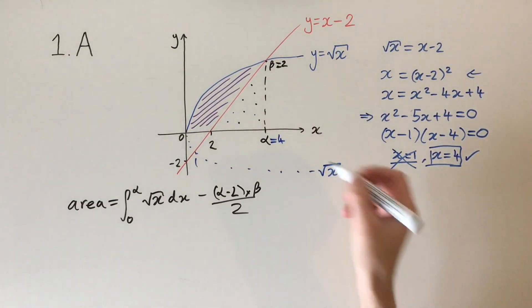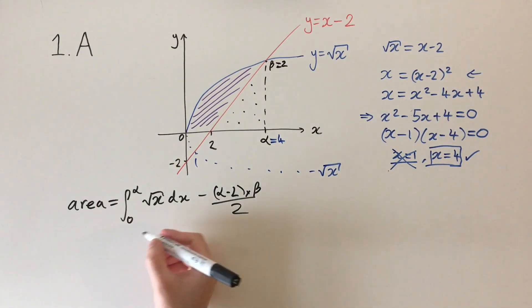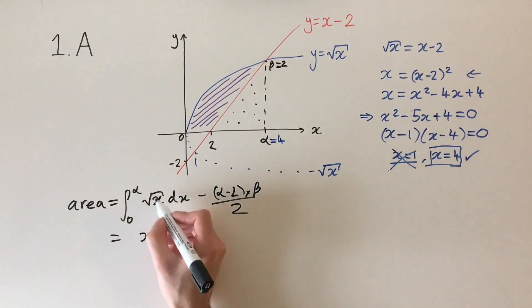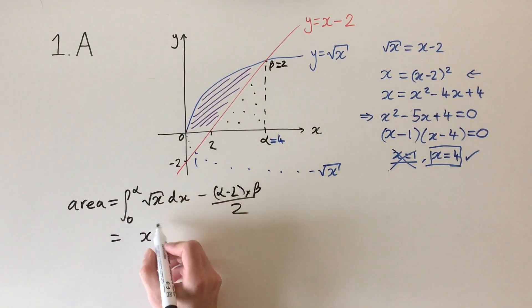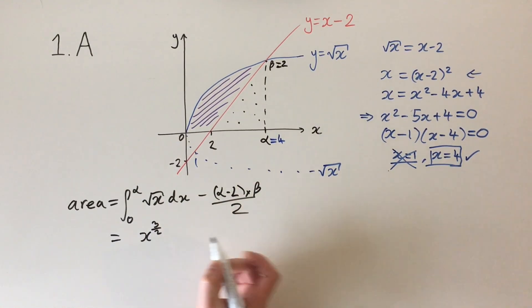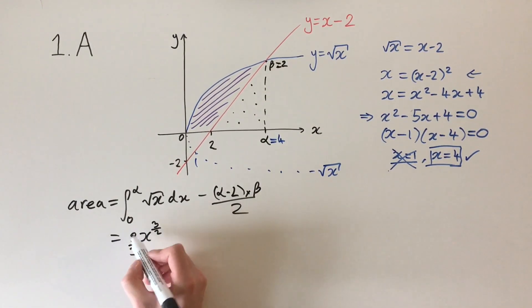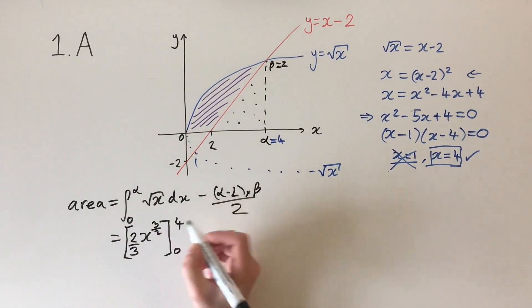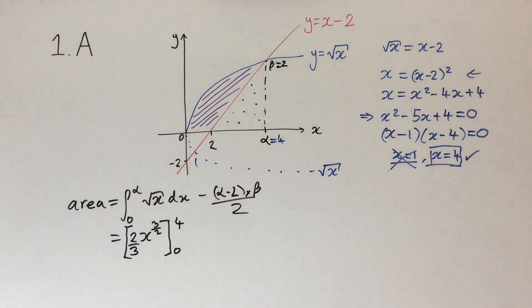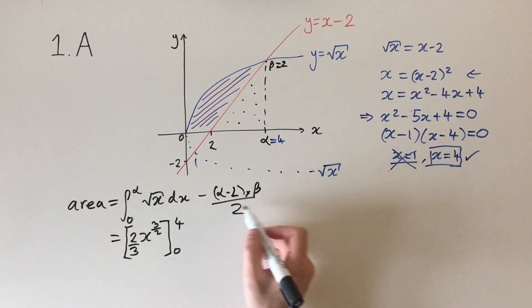Now we have everything we need to solve this equation, so it should be a straightforward integration problem. We have the integral of square root of x between 0 and 4. This is fairly standard: you increase the power by 1 to get 3 over 2, and divide by the power, which is the same as multiplying by 2 over 3. Then we remember to put the limits in, which is 0 and 4.